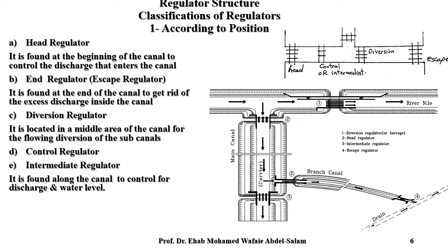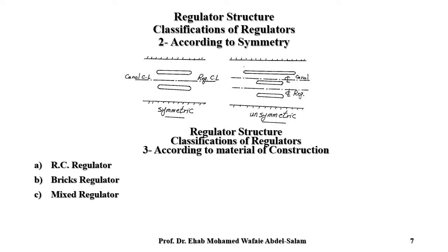A divergent regulator is located approximately in the middle area of the canal to control the diversion of sub-canals. There is also a control regulator and an intermediate regulator found along the canal to control discharge and water level. These are five types according to position.